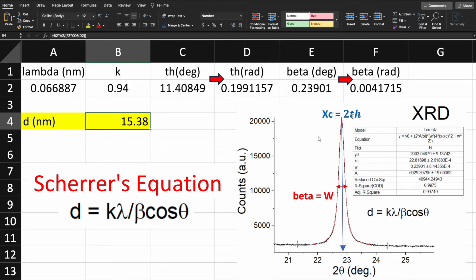k is 0.94, which is the Scherrer constant for spherical particles. Lambda is the wavelength. You will be confused that the wavelength I am showing is much smaller than what we see usually from copper K alpha, which is 1.54 angstrom. Why is it so small? Because I have used synchrotron XRD to record this x-ray diffraction pattern.